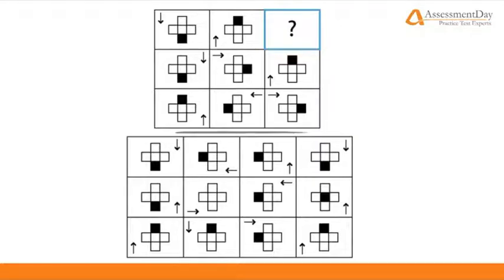We can first notice that each visual seems to have two components: the arrows, with their various directions and placements, and the cross of squares in the middle, of which one is shaded.